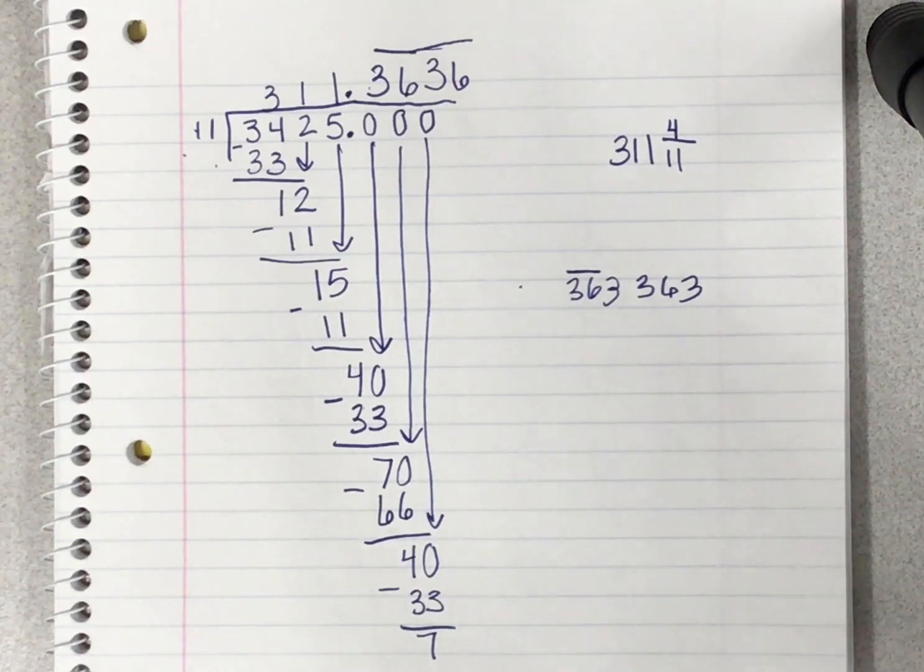On the assessment, you can choose either way to write your remainder. You can just do the fraction, or you can do just the decimal. Exceeds would be trying both routes, fraction and decimal. Let Mrs. Gall know if you have any questions.